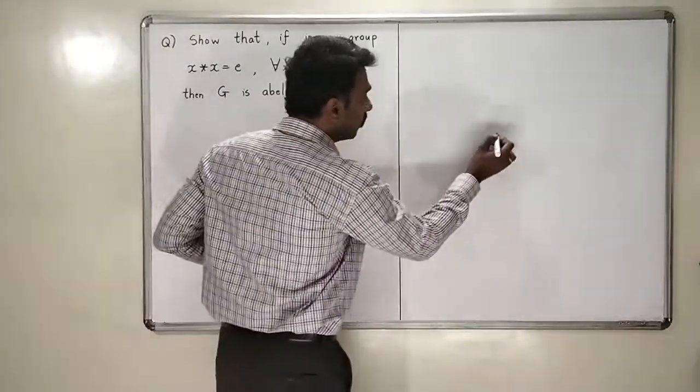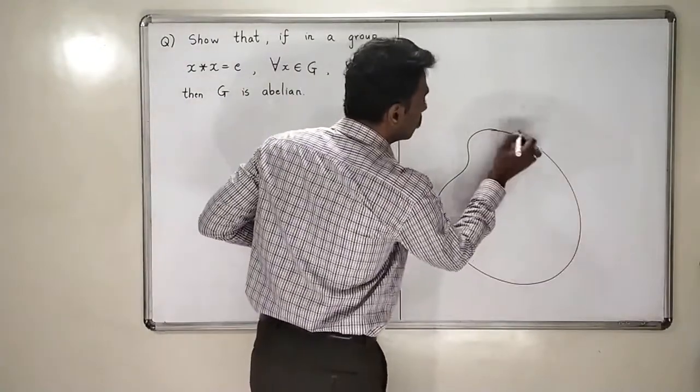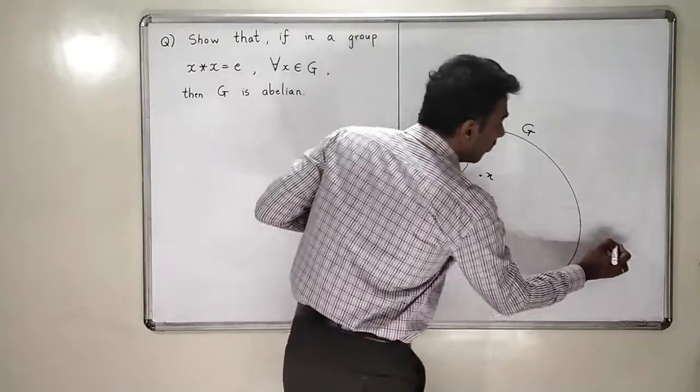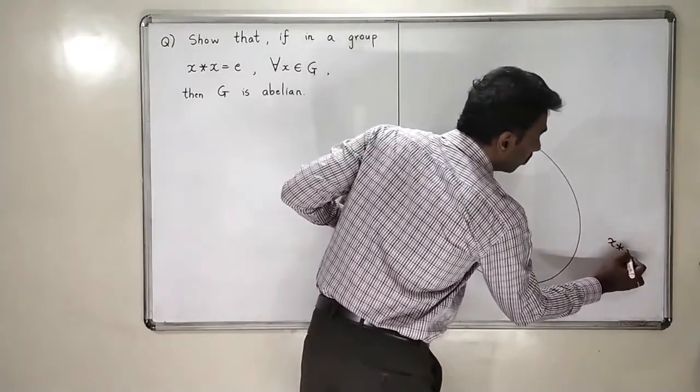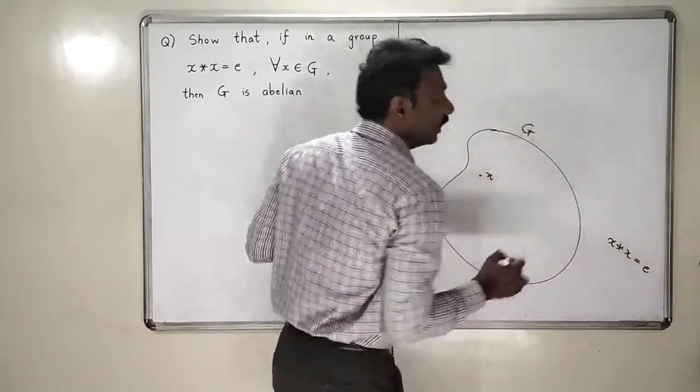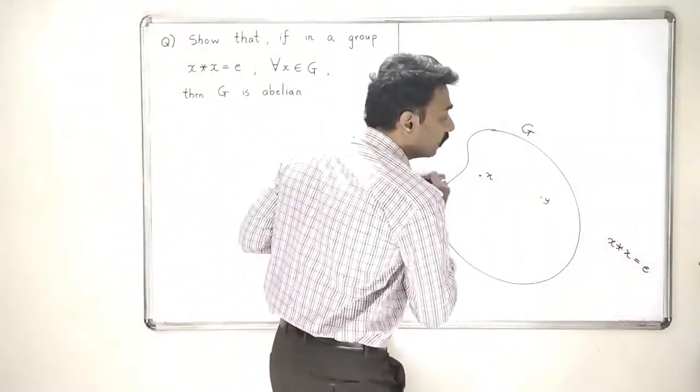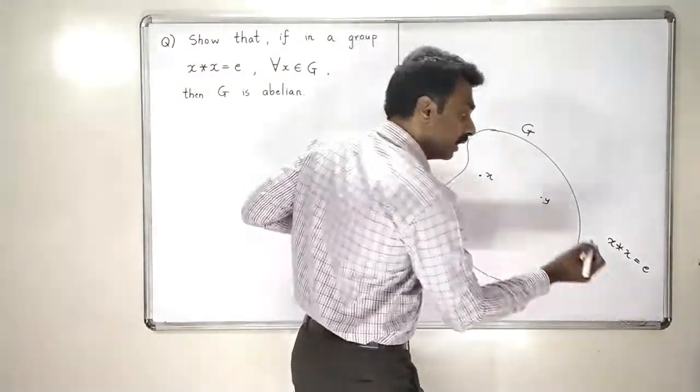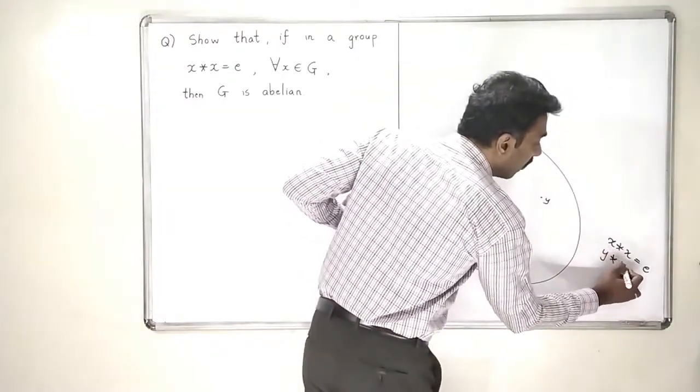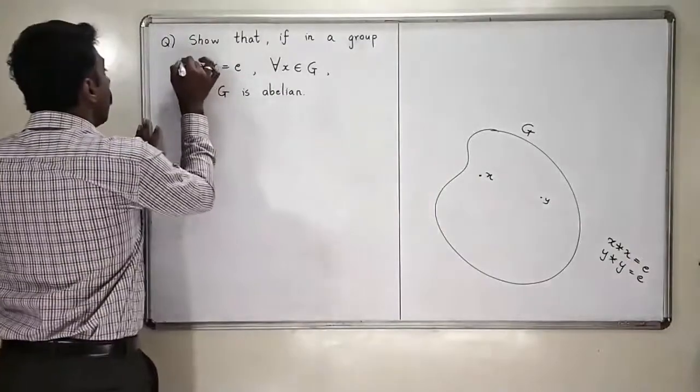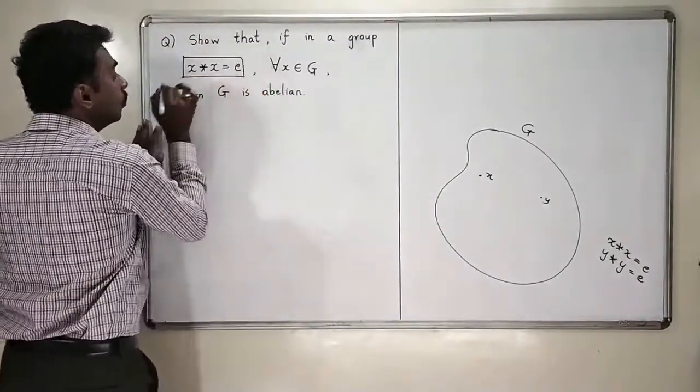I have a group in which if I take any element, that element star with the same element is always going to give me identity. So if I take an element y in this group, what property will y satisfy? Same property that y star y will be equal to identity. So this property is true for all elements of that group.